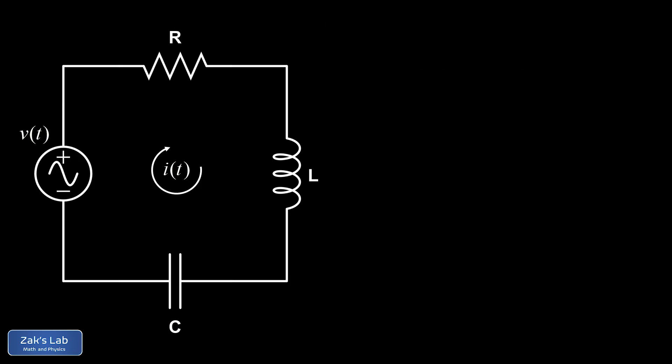In our main RLC video we did the full derivation of the voltage as a function of time for an RLC series circuit by applying Kirchhoff's voltage law. We said the sum of the voltage changes on a closed loop is zero, or the voltage across the source equals the sum of the voltage drops across the individual circuit elements.